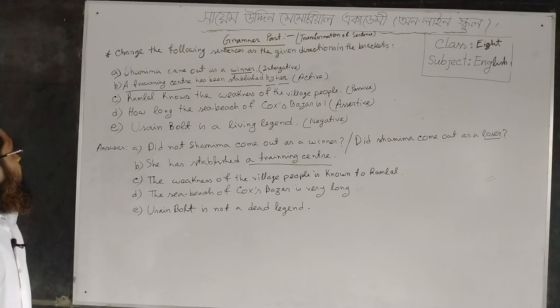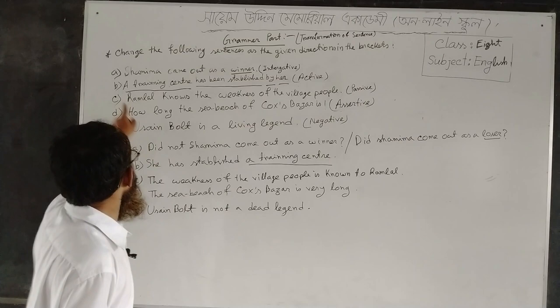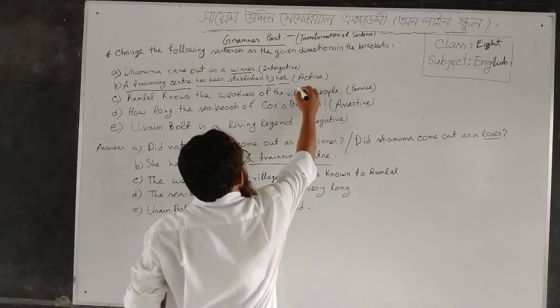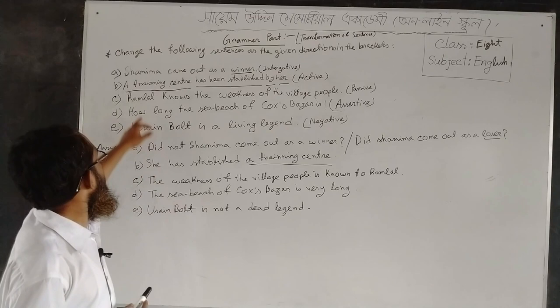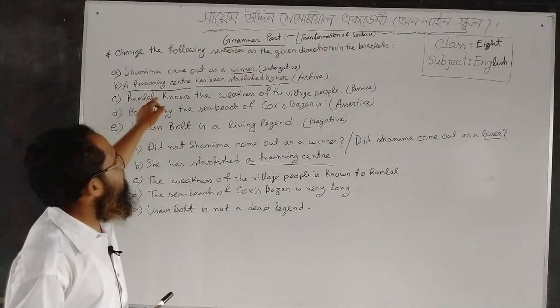Sentence C: Ramlal knows the weakness of the village people. Passive is in the bracket — that means you have to change the voice of the sentence from active to passive. Here the given sentence is an active one; you have to make it a passive one.